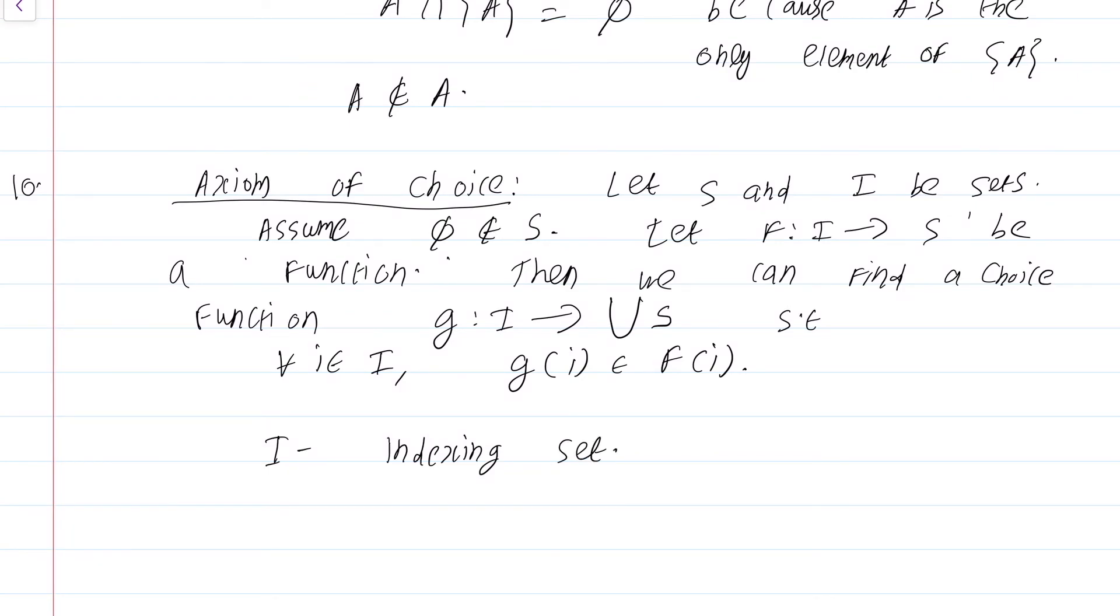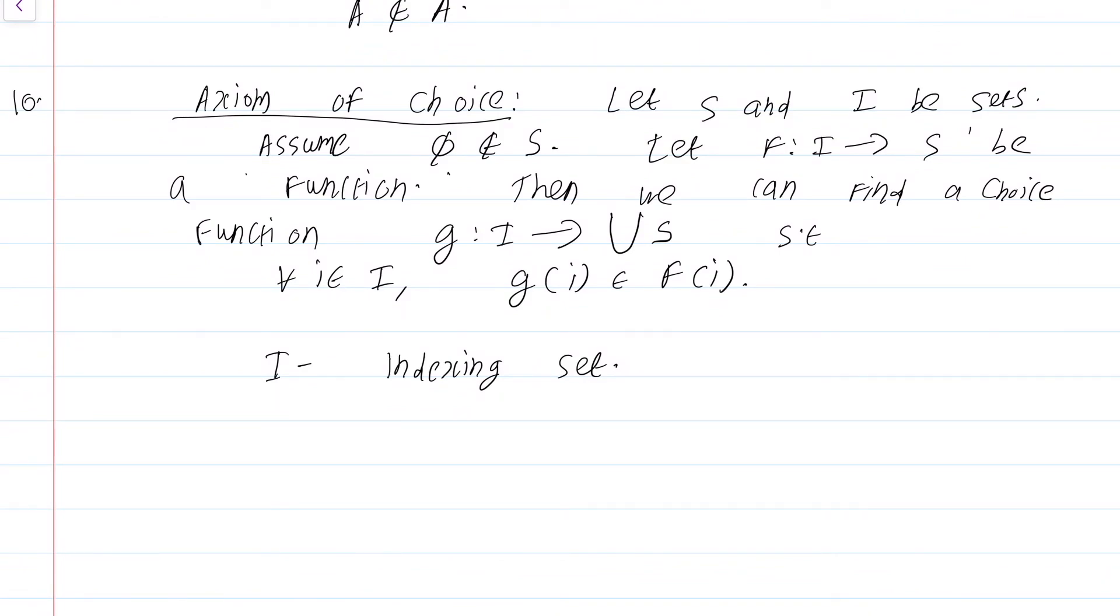Essentially, what we have done is we have indexed some sets in the set S. Then, what this axiom is saying is that you can find another set which is precisely one element from each of these index sets. That is what essentially the function G from I to union of S is. It is indexing elements of the elements of S. So, this axiom of choice is used in topology extensively. We will only briefly see topology. As I say again, I do not really know whether we will use this axiom, but I am sure I will use it without my own knowledge.